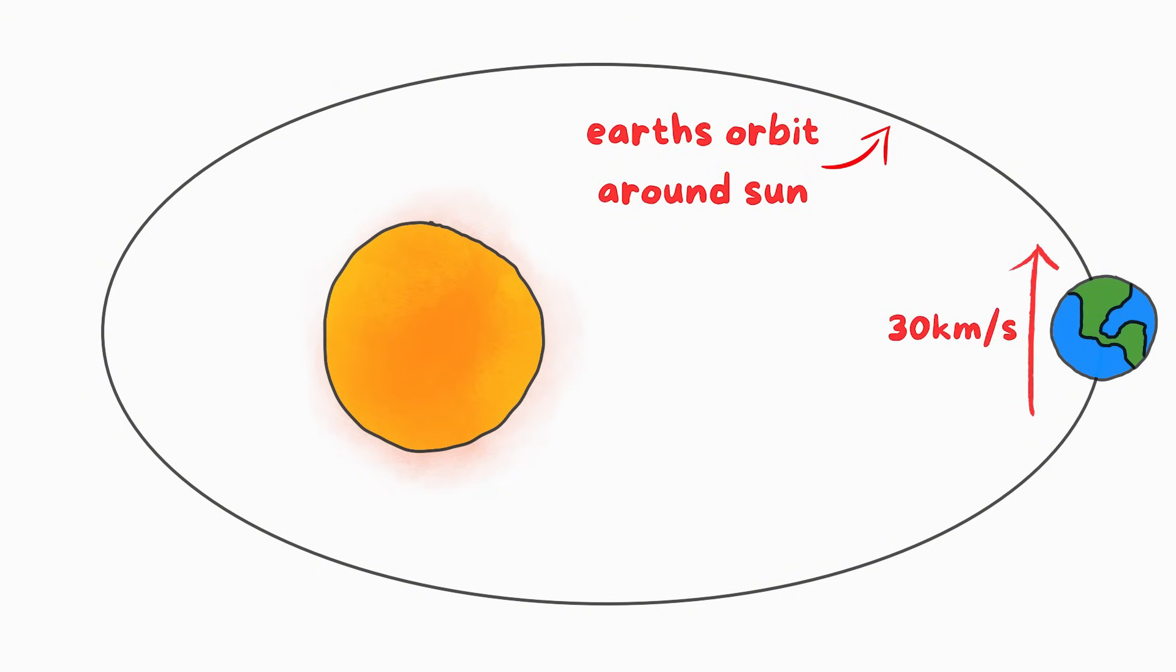Earth is moving at about 30 kilometers per second around the sun. If you want to throw something into the sun, you don't just point a rocket at it and fire.